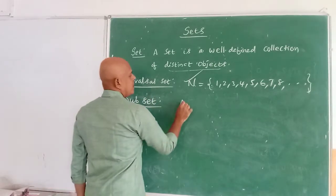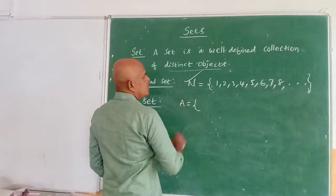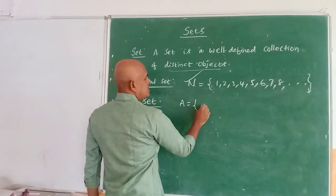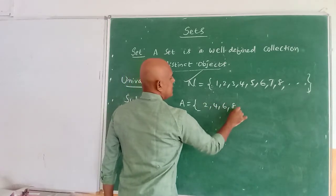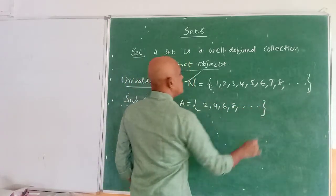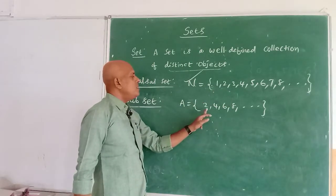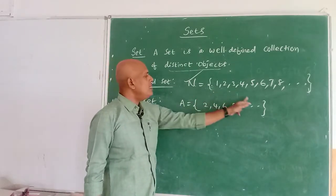Suppose if we take A equals... N is a natural number. A equals even numbers: 2, 4, 6, 8, and so on. If N is a natural number set and A equals 2, 4, 6, 8, all these are...